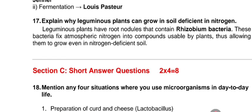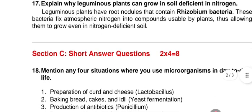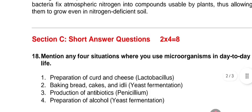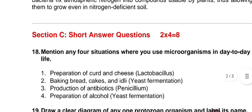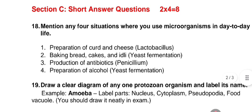Question 17: explain why leguminous plants can grow in soil deficient in nitrogen. Answer: leguminous plants have root nodules that contain Rhizobium bacteria. These bacteria fix atmospheric nitrogen into compounds usable by plants, thus allowing them to grow even in nitrogen-deficient soil.